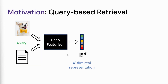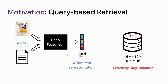Let us look at the core setup at web scale for query-based retrieval. An image or text-based query is encoded to a d-dimensional real representation using a deep neural network. The entirety of web data is also encoded in a similar fashion to form extremely large, trillion-scale databases. We then use nearest neighbor lookup to obtain the most relevant data points for the given query.